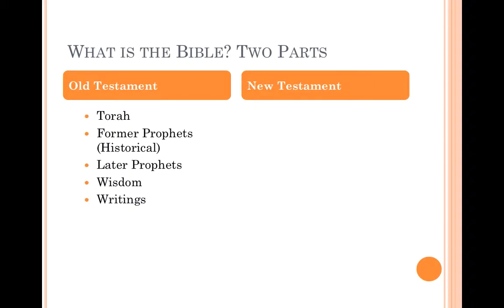The Old Testament also contains the former prophets, or historical books — in Christianity we call them the historical books, but in Judaism they're called the former prophets. These are the books of Joshua through 2 Kings. Then the later prophets: Isaiah, Jeremiah, Ezekiel, and some smaller prophetic writings. And then the wisdom writings: Proverbs, Song of Solomon, and other writings like Chronicles and Psalms.